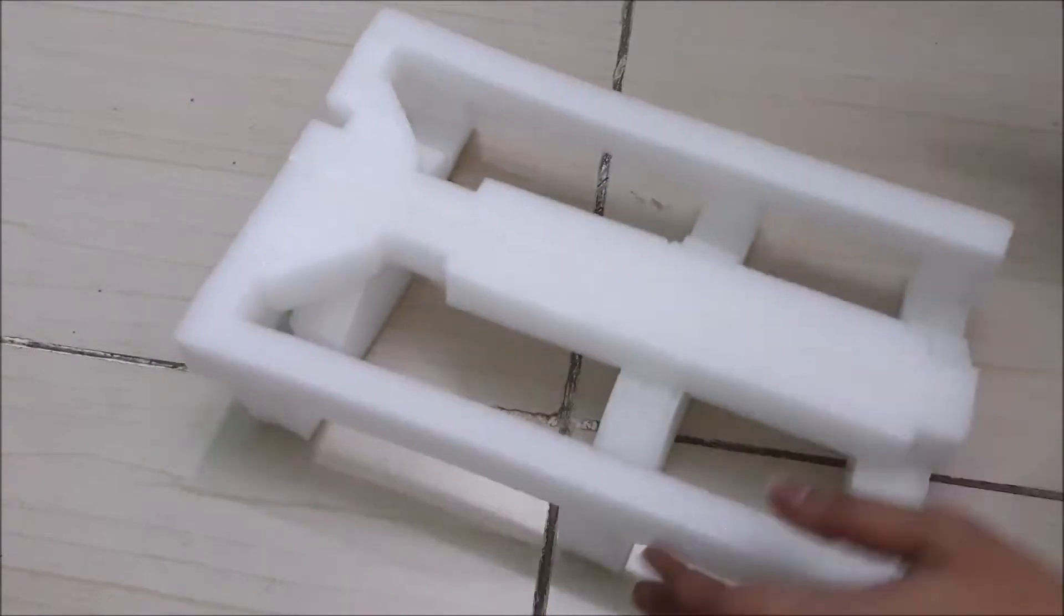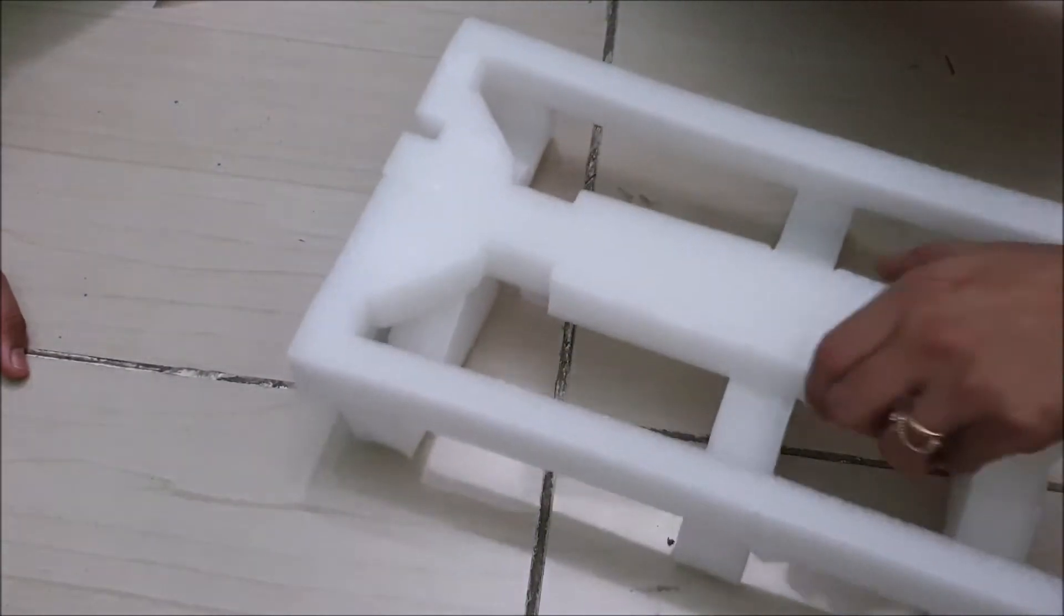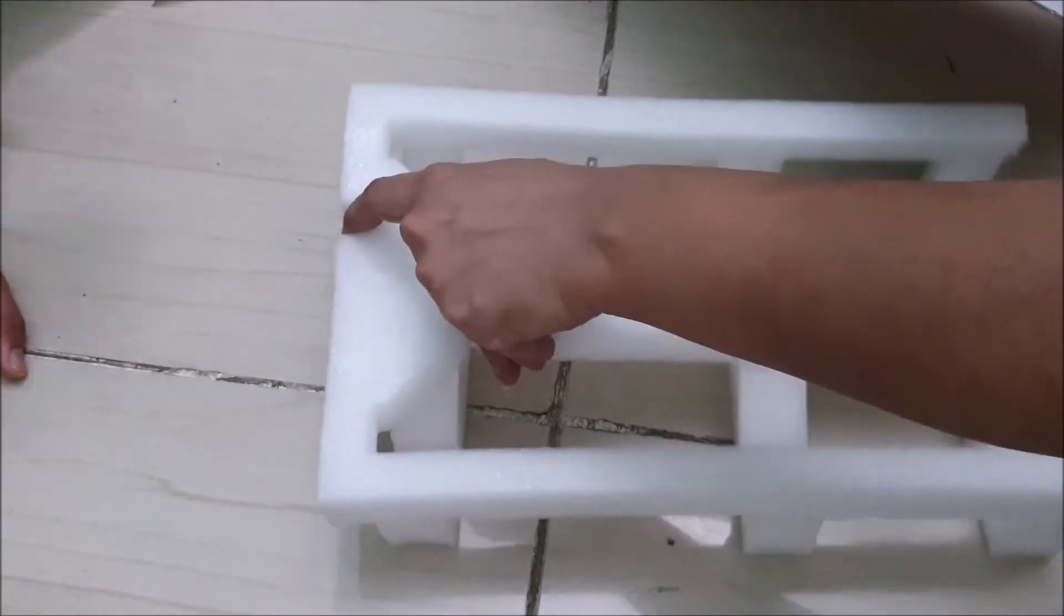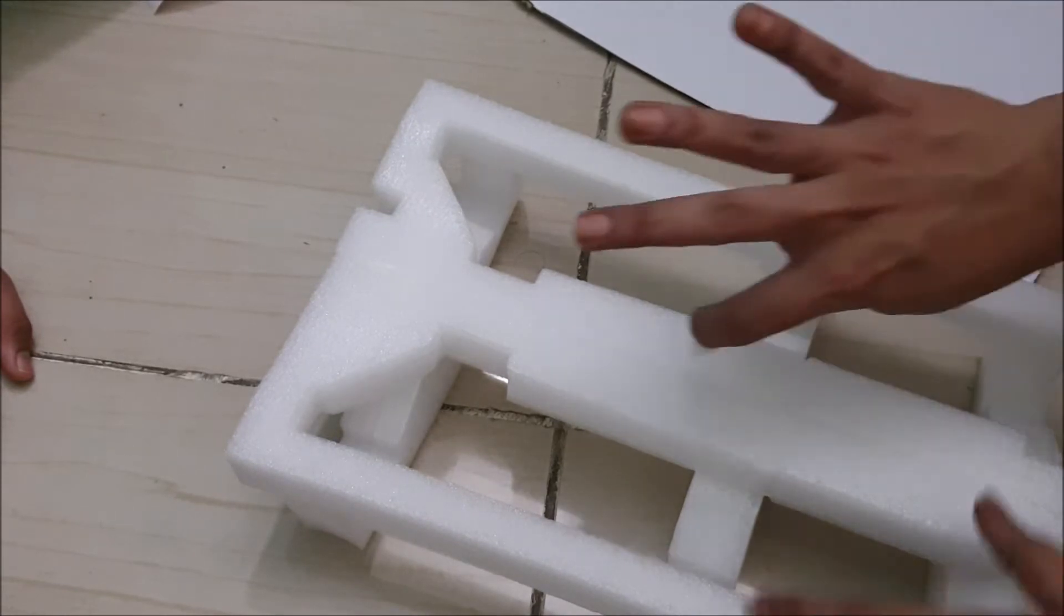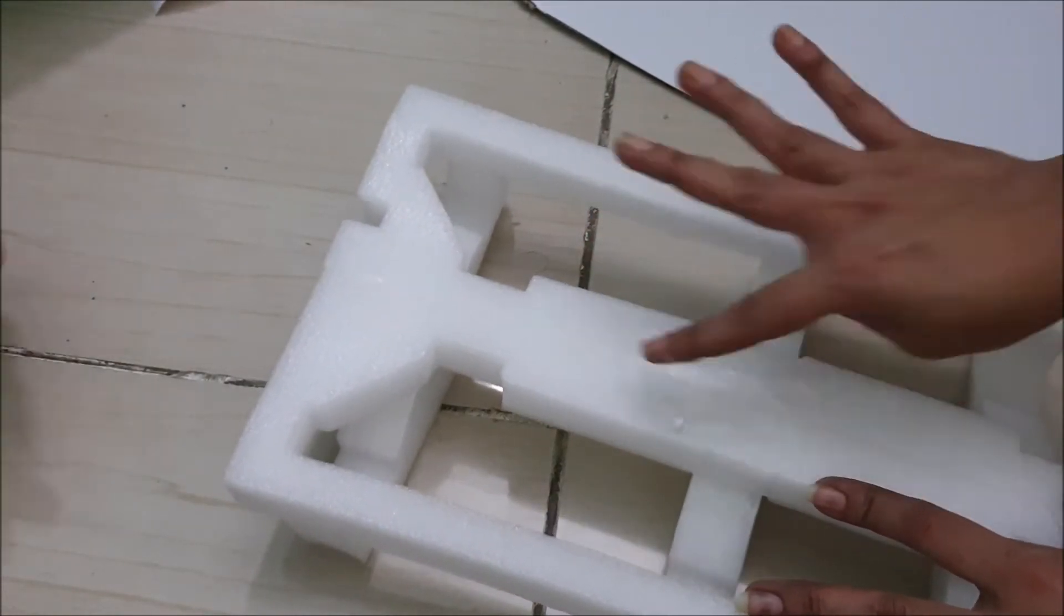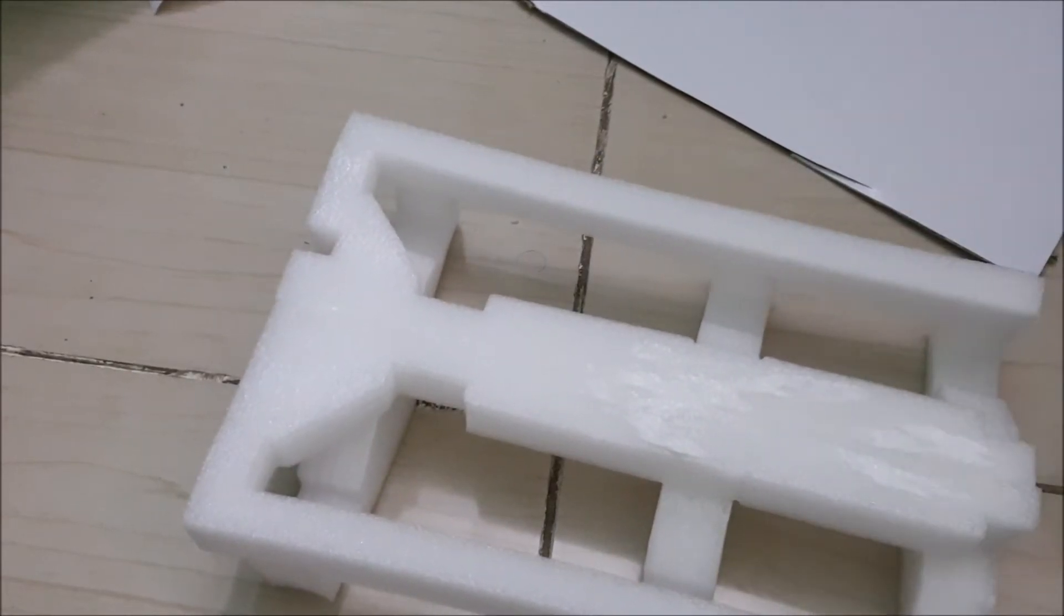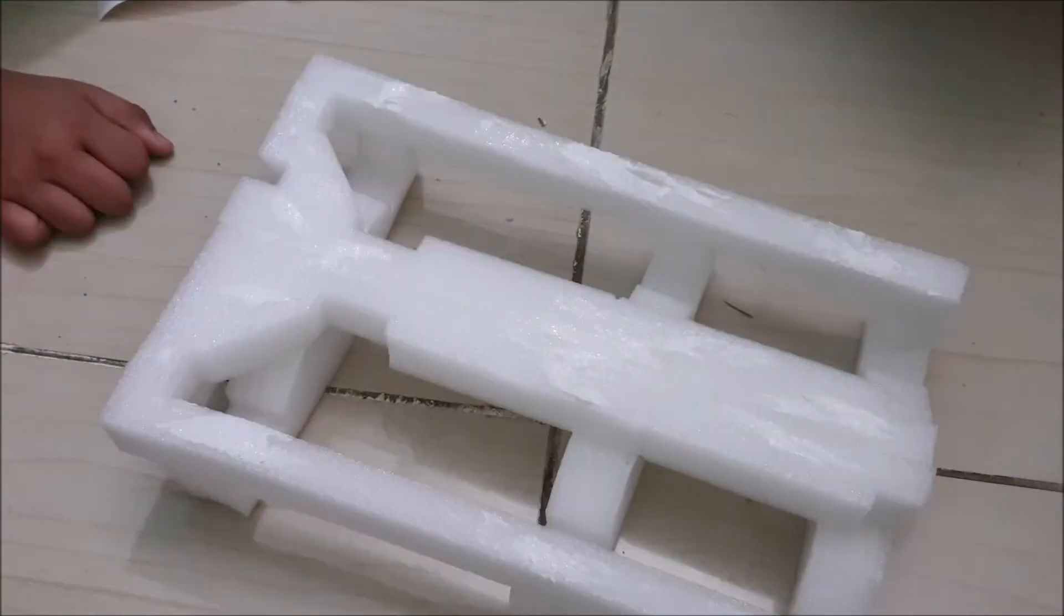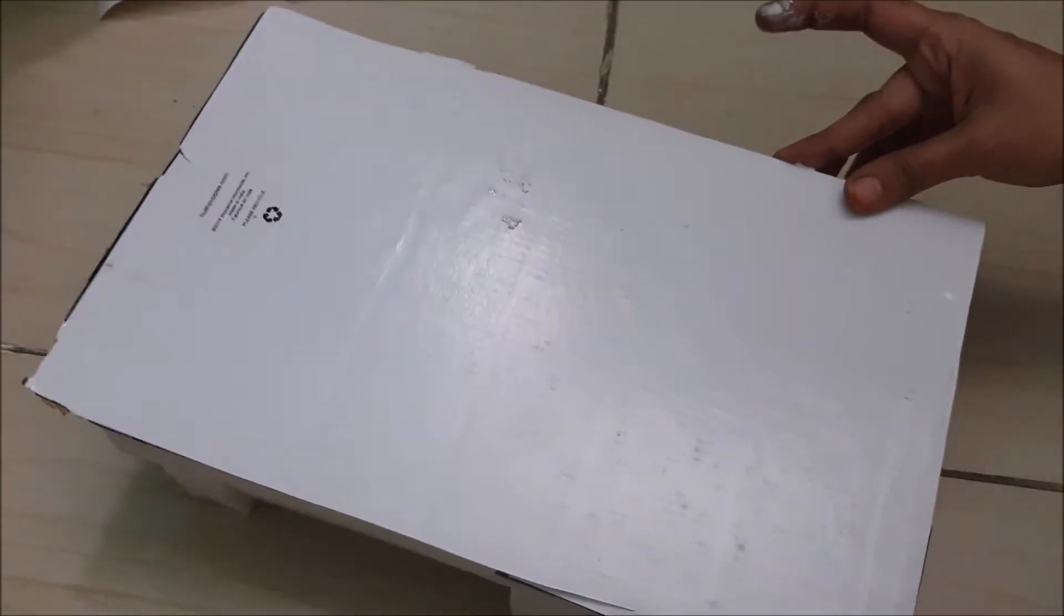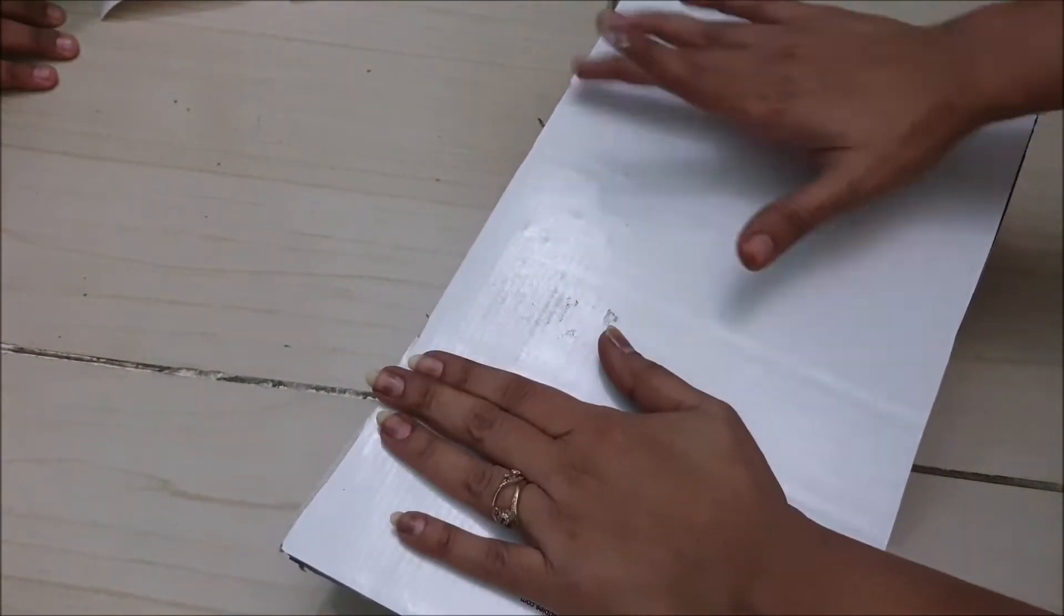You can take something very thick to make your bed. Now first, we need to apply glue and stick it, and again we need to apply the glue and stick a cardboard piece on it.